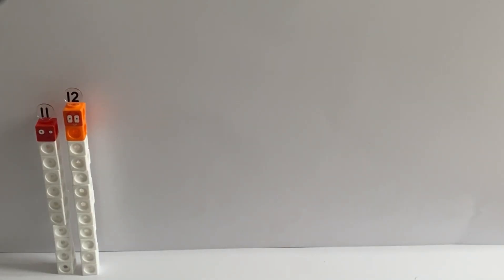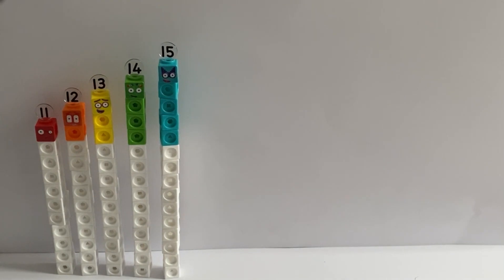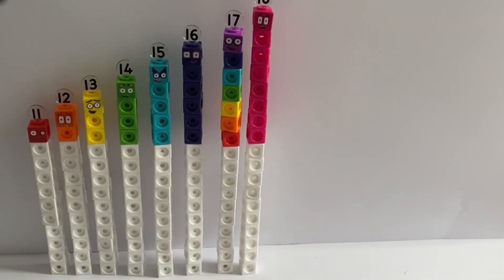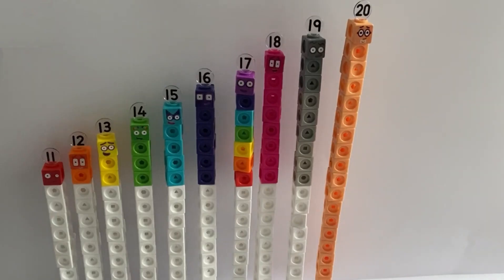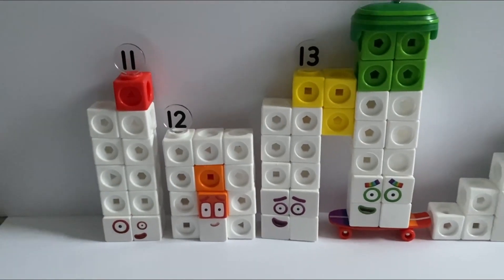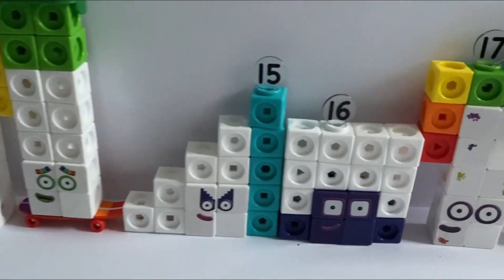So in their tall forms, we have 11, 12, 13, 14, 15, 16, 17, 18, 19, and 20. And then in their other most common forms, we have them all in a line.